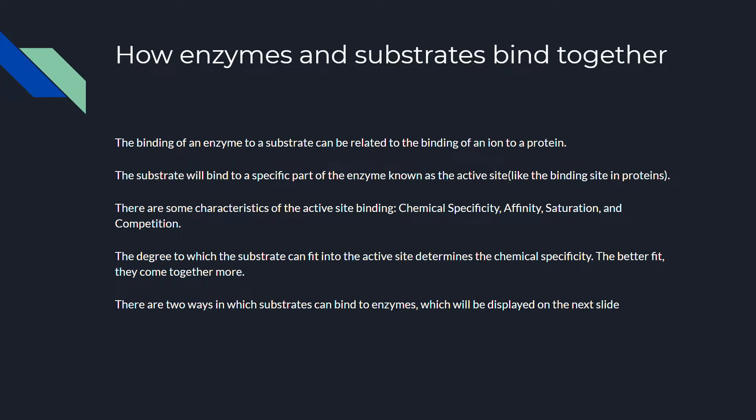The characteristics of active site binding include chemical specificity, affinity, saturation, and competition. Chemical specificity refers to how well the substrate and the enzyme bind together — how well they fit. Affinity refers to the strength of the binding between the active site and the enzyme. Saturation is the amount of active sites that are binding in a given area, and competition is when different substrates compete to bind to an active site.